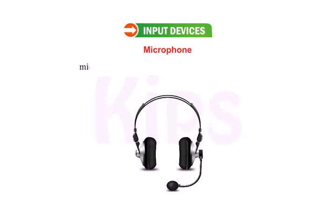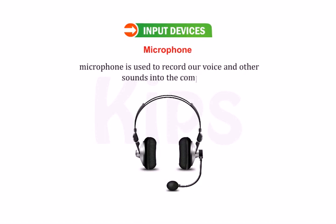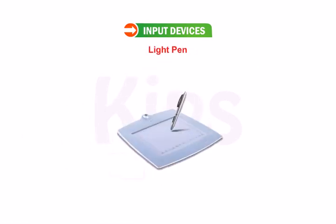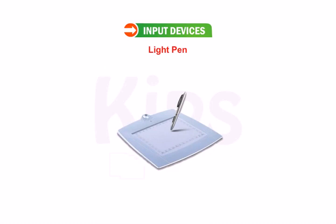A microphone is an input device used to record our voice and other sounds into the computer. A light pen looks like a pen that can be used on a special pad; whatever you write on this pad can be seen on the monitor.